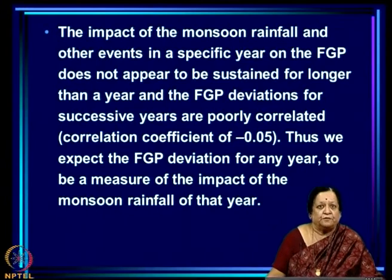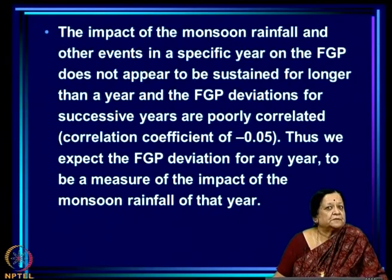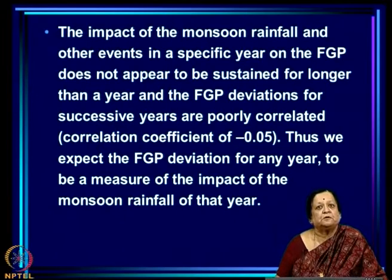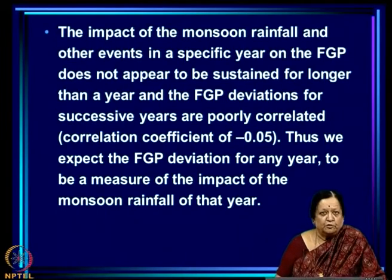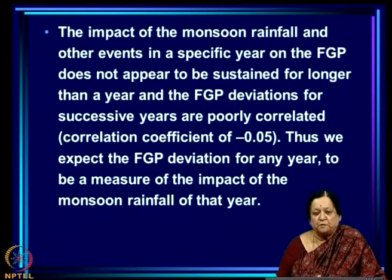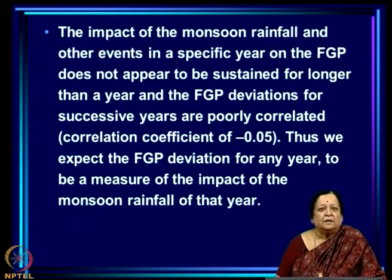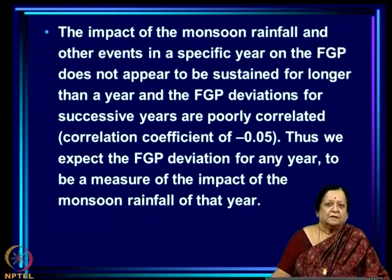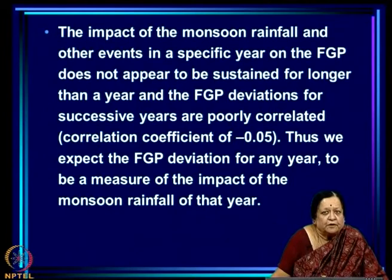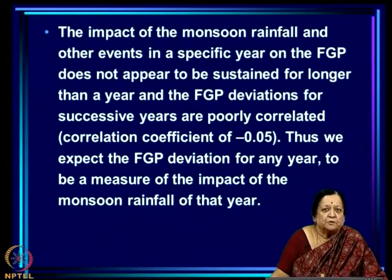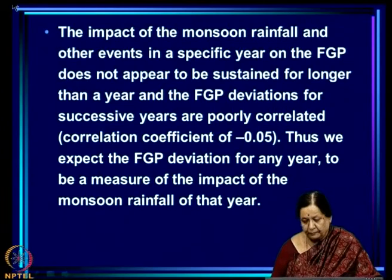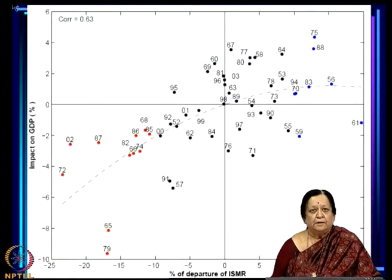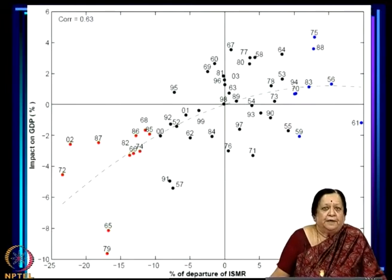The impact of monsoon rainfall and other events in a specific year on FGP does not appear to be sustained for longer than a year — unlike GDP. The FGP deviations for successive years are poorly correlated, with a correlation of only minus 0.05. Thus we expect the FGP deviation for any year to be a measure of the impact of the monsoon rainfall of that year.